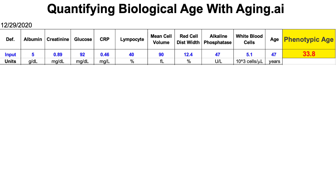Levine's biological age calculator, also known as phenotypic age, isn't the only biological age calculator that can be used. Today I'm going to talk about quantifying biological age with aging.ai.